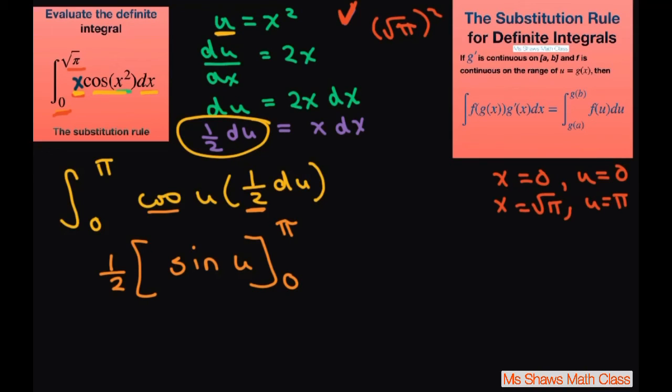So from there, we're just going to plug substitute in. We have 1 half, and you always start with this one first. Sine of pi minus sine of 0. So this is going to give you 1 half. Sine of pi is 0, and sine of 0 is 0. So we end up, all that work and all we get is 0.